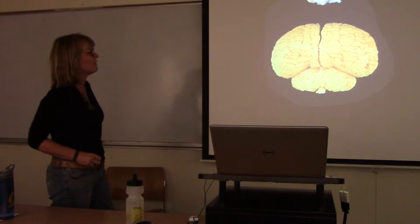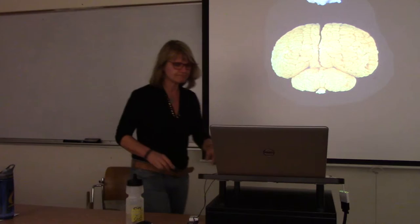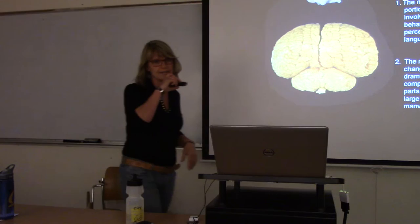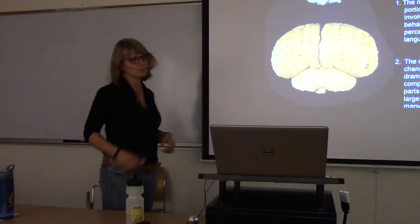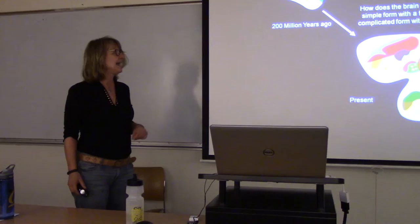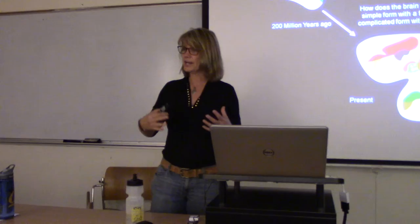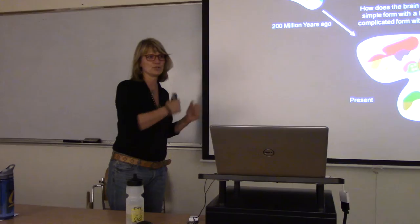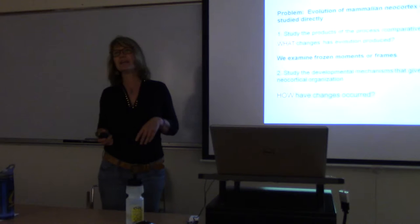This is a brain of a bottlenose dolphin, this is a brain of a small marsupial in Australia — a native cat. One thing you'll notice is the neocortex: this little tiny bit on the outer surface of the brain, and in some species it's expanded dramatically. The neocortex is the portion of the brain involved in complex behaviors like cognition and language — all the things we associate with the human condition. It's also the portion of the brain that's changed most dramatically in species over time.